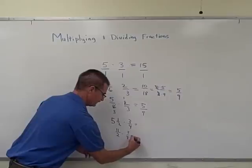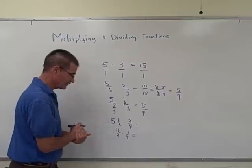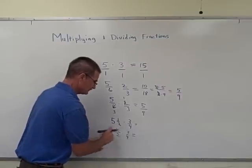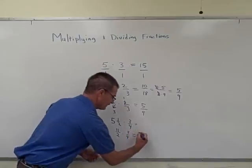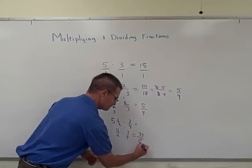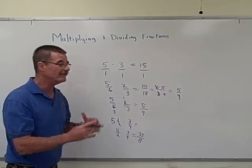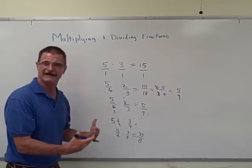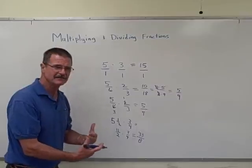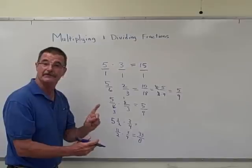And so we have 11 halves times 3 fourths. I can't see anything to cross-cancel here, so we're just going to multiply straight across. 11 times 3 is 33 and 2 times 4 is 8. And that's also now an answer in the improper form. I always hated that word. It makes it sound like something's wrong with it. There is nothing wrong with an improper fraction. It's just a fraction that's bigger than 1.